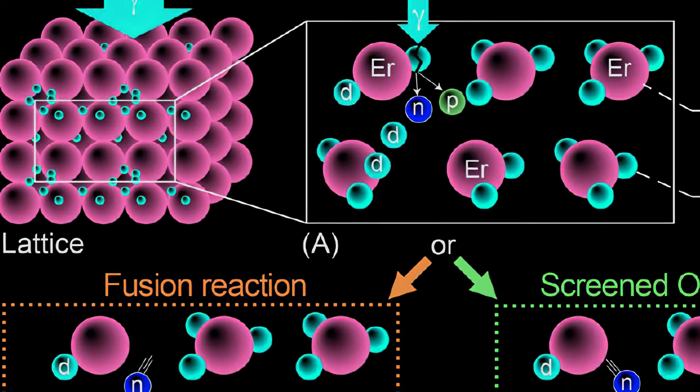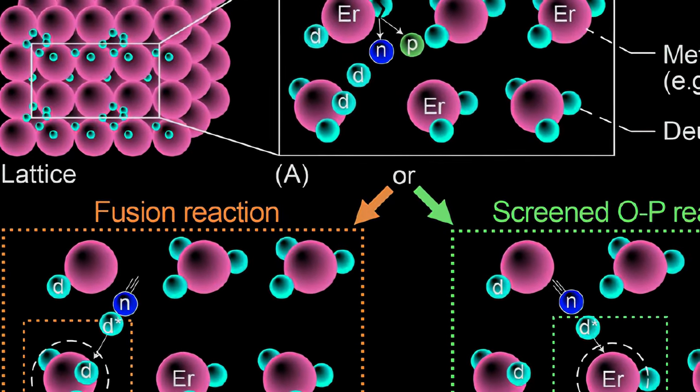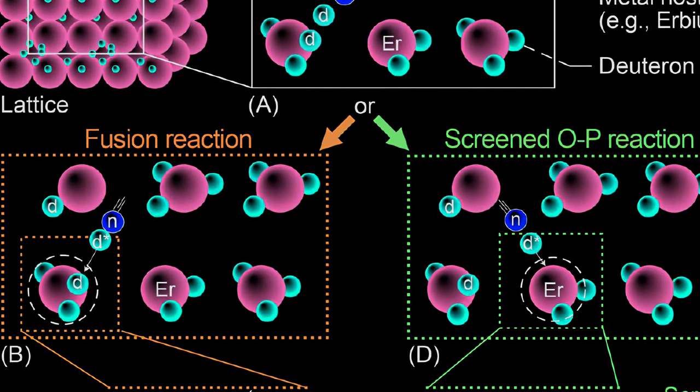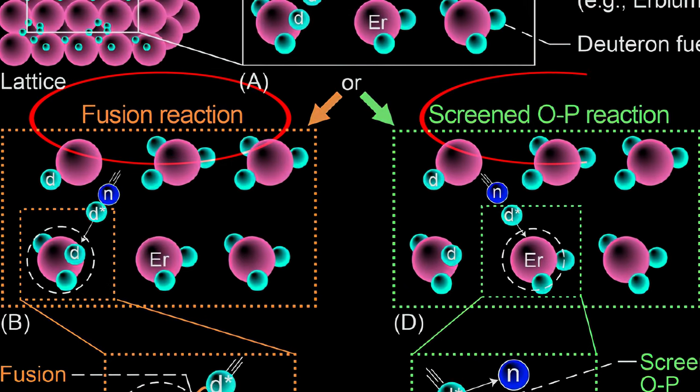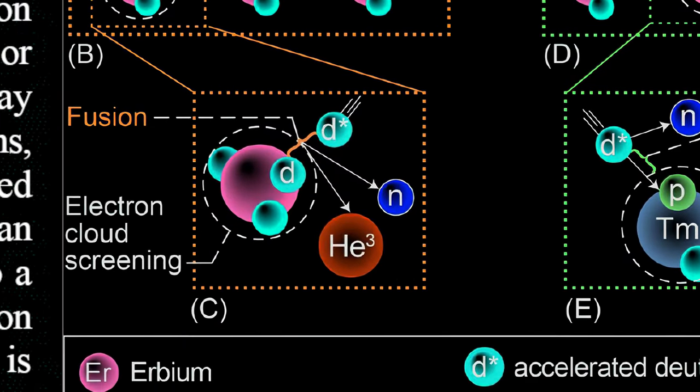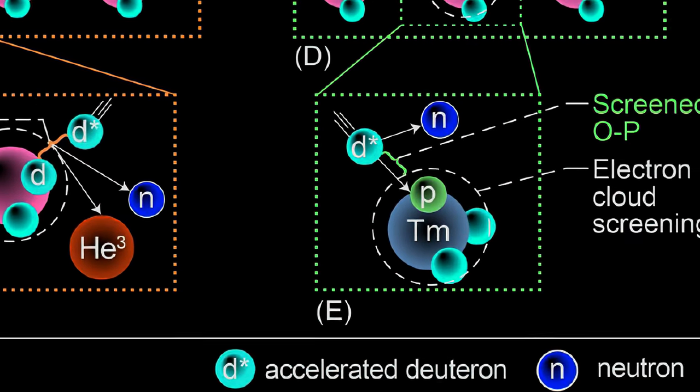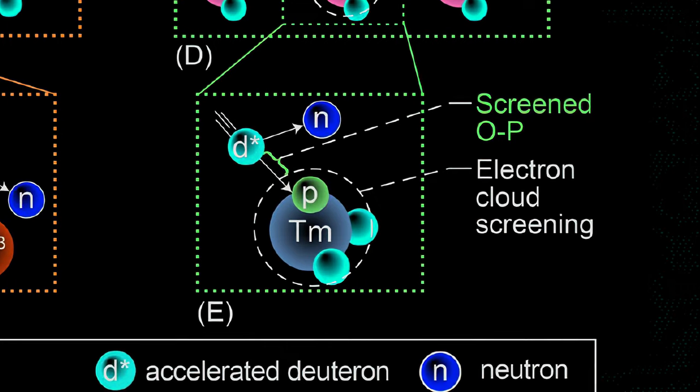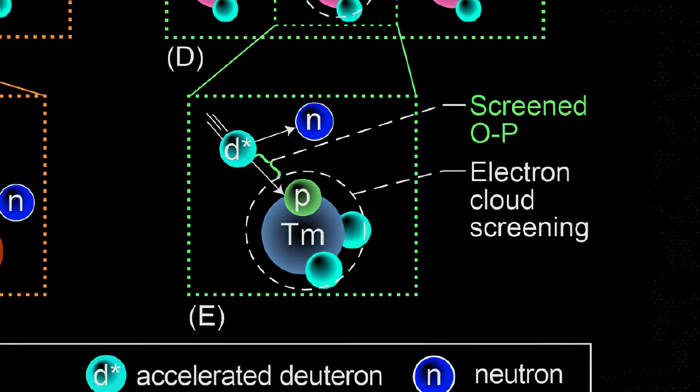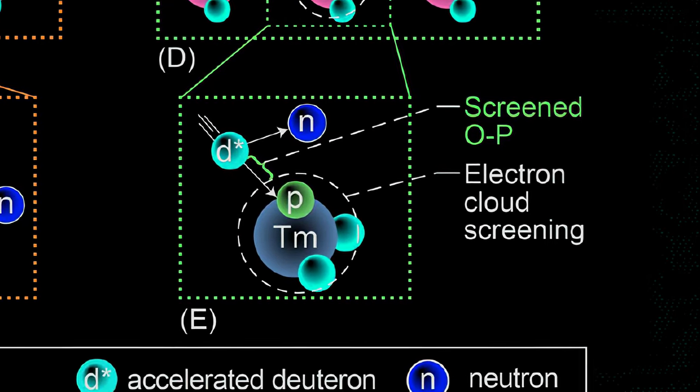This opens the door to two different pathways for the product neutrons: either a fusion reaction or a screened Oppenheimer-Phillips stripping reaction. The fusion reaction occurs when a neutron collides with a static deuteron, which then impacts another deuteron with sufficient energy to overcome the Coulomb barrier and fuse, which releases helium-3 and a neutron or tritium and a proton.